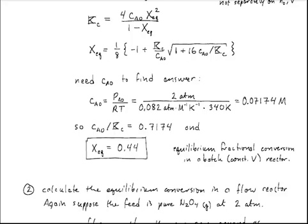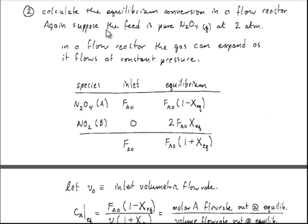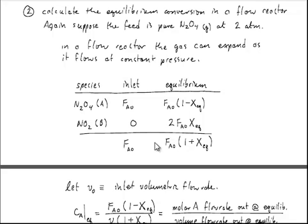What if we were to do this same reaction in a flow reactor where effectively the pressure is constant and the gas is allowed to expand as it decomposes? Suppose again a feed gas of nitrogen tetroxide at 2 atmospheres. In a flow reactor the gas expands, so we have a number of moles per second flowing in, and after reaching equilibrium the amount of N2O4 remaining is (1 minus XEQ) times FA0, while the amount of NO2 flowing out is 2*FA0*XEQ. The total molar flow out is FA0*(1 plus XEQ).